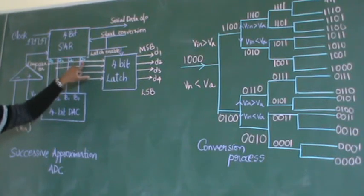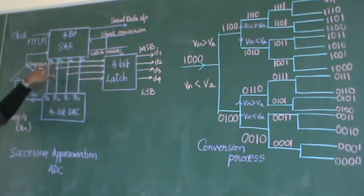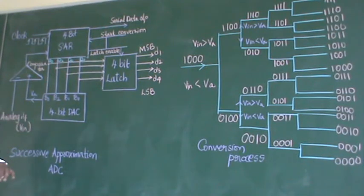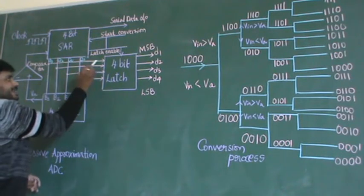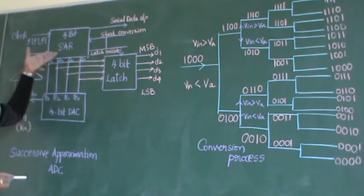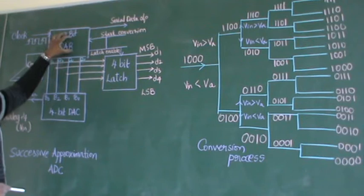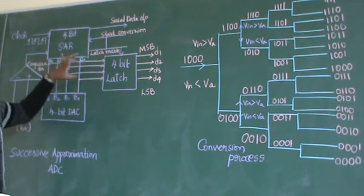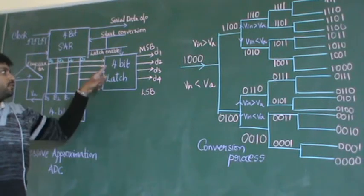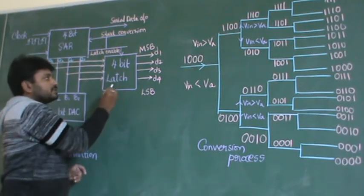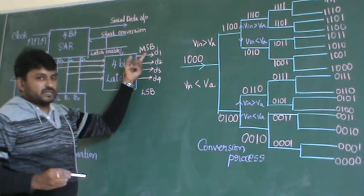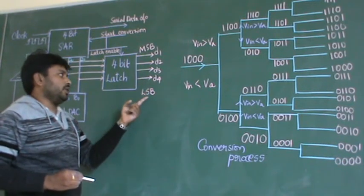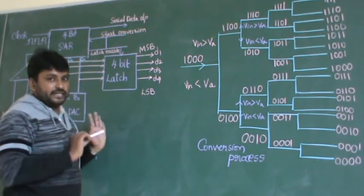The same Q3, Q2, Q1, Q0 output from the SAR also goes to the 4-bit latch simultaneously. The output coming from the latch is represented as D1, D2, D3, D4, where D1 is always the MSB — most significant bit — and D4 is always the LSB — least significant bit. This is the complete construction.